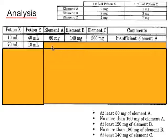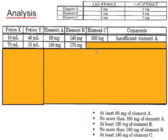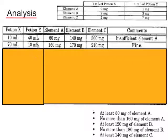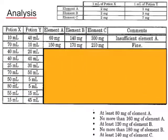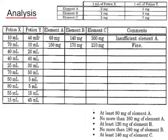Next I'll try 70ml of potion X and 10ml of potion Y. Using the same method you can see that this mixture contains 150mg of element A, 170mg of element B, and 210mg of element C. This does meet the criteria. Now pause the video and try some different amounts of potion X and Y — these are suggestions but you can try amounts of your choosing — and complete the table to see if you can work out a pattern or a range of values that will meet these criteria.